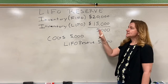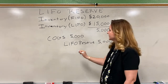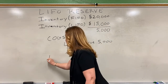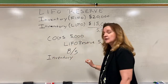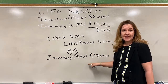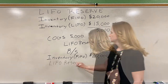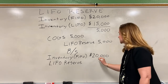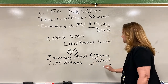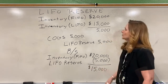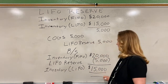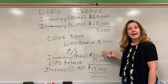On the balance sheet, we actually keep the inventory account at FIFO. So the inventory section will show inventory using FIFO at $20,000. Below that would be the LIFO reserve, which is a contra account, so it shows up as a negative $5,000. We then net the two to get $15,000, which is our inventory at LIFO. That is how it's disclosed on the balance sheet.